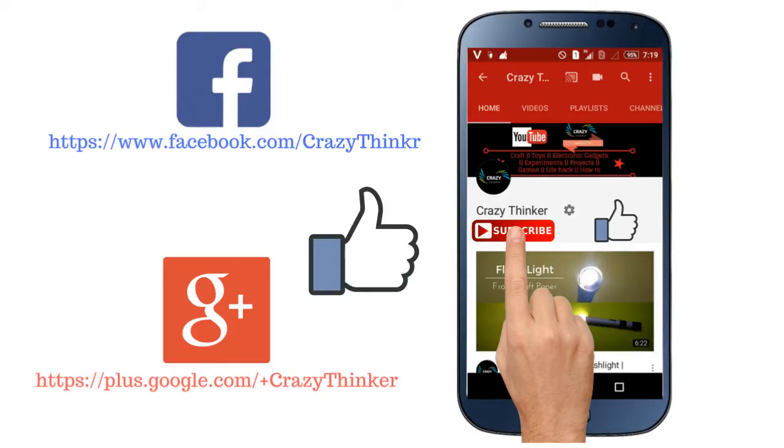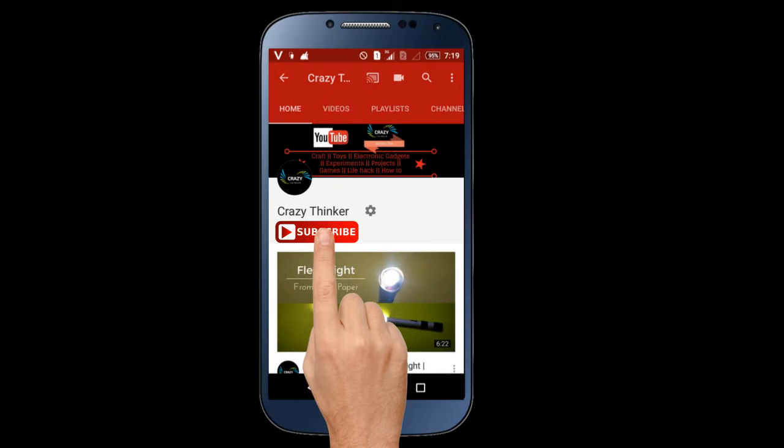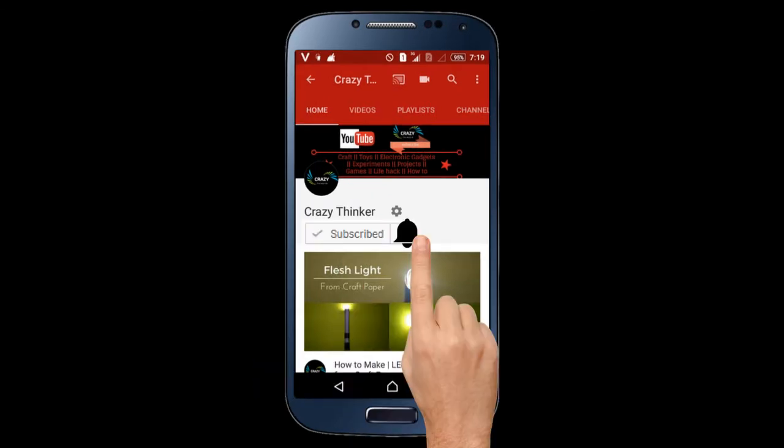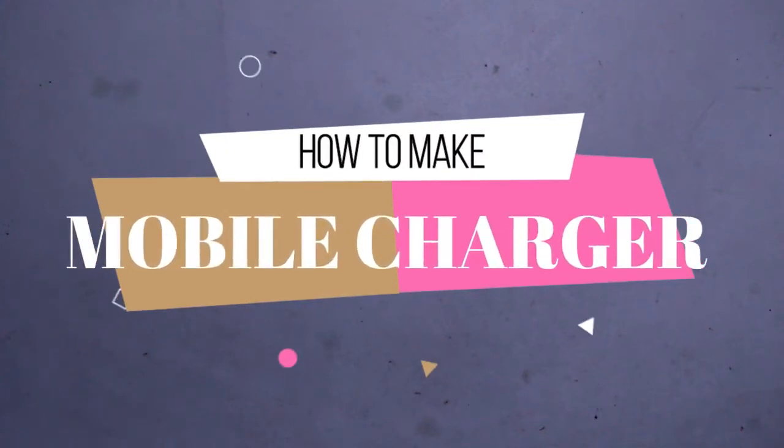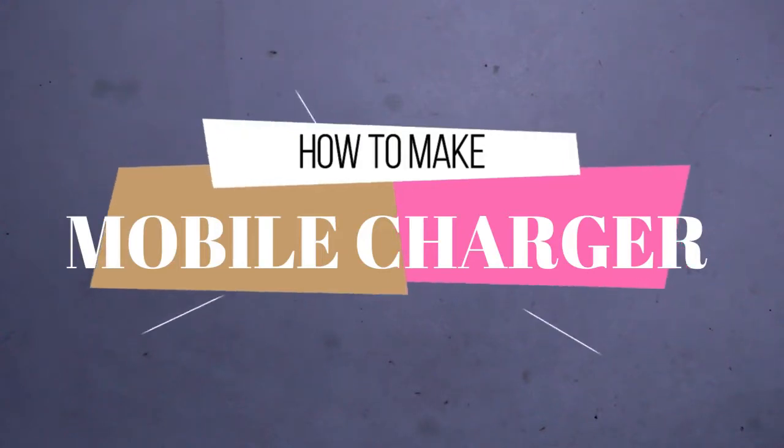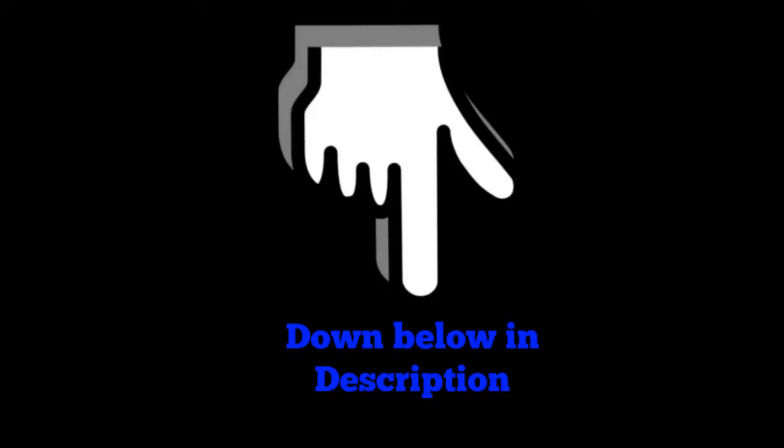Welcome back to my channel Crazy Thinker. If you are new here, then subscribe to my channel and press the notification bell. Today I will show you how to make an MNC mobile charger. This MNC charger can charge from one mobile to another mobile. There is no power source required like power bank or AC current, but you only need one charged mobile. Whatever materials I am going to use here, I have given the link in the description. You can get the materials from there. So without wasting our time, let's start.